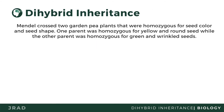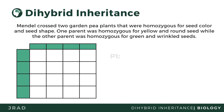Mendel crossed two garden peas that were homozygous for seed color and seed shape. One parent was homozygous for yellow round seed, while the other parent was homozygous for green and wrinkled seeds. To perform the test cross, we must first identify the P1 generation, where one parent has pure yellow round seeds and the other has pure green wrinkled seeds.